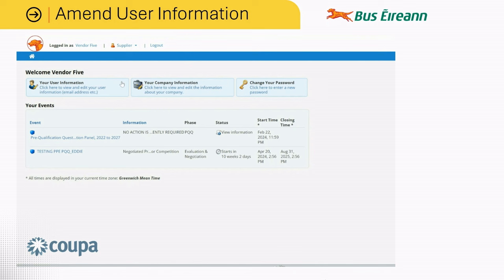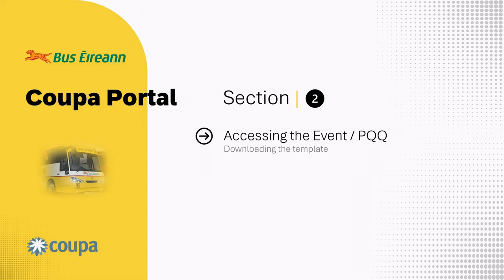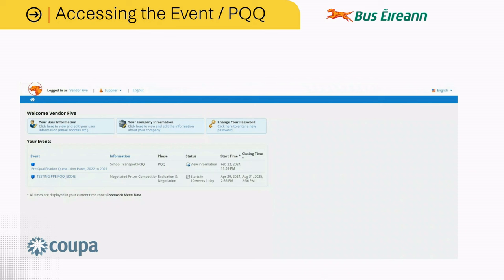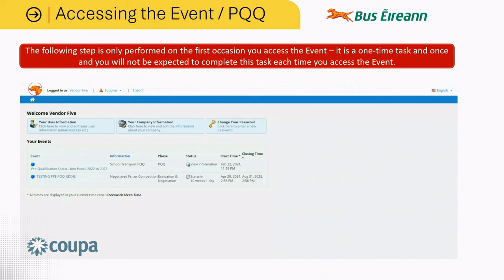Section 2: Accessing the Event. To access the relevant event, simply click the event title. The first time you access the event, you will be required to download and read the PQQ information documentation. This is a one-time task and you will not be expected to complete this task each time you access the event from here on in. To do so, click the event title.